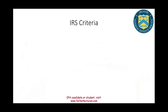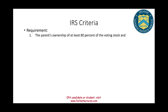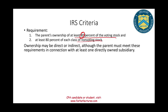Let's talk about the IRS criteria and rules. What are the requirements? The parent company has to have at least 80% of the voting stock and at least 80% of each class of non-voting stock. So notice you have to own at least 80% for tax purposes — both voting and non-voting stocks. The ownership here could be direct or indirect, although the parent must meet this requirement in connection with at least one directly owned subsidiary.